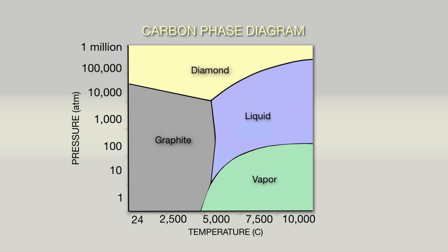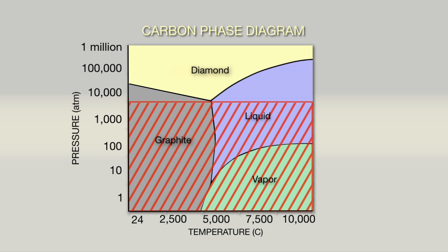People had looked at the pure carbon phase diagram and saw that diamond was unstable at low pressure and low temperature, and they extrapolated from that to all systems. And whenever anyone presented work of diamond being formed at low pressure and low temperature, people presented the pure carbon phase diagram as evidence why that could not happen.